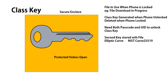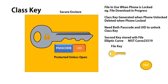The way that happens is those files are protected with the second type of class key, which actually has two keys. There's a main class key, which is protected with the passcode and the UID, and this is used to protect the file key.